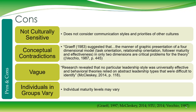McCleskey also highlights that there are quite a few ambiguities. Because it is a straightforward theory, a lot of things are vague and require judgment from the practitioner. For example, how do you judge when someone is in between two quadrants, and how is this treated? McCleskey stated: 'Research revealed that no particular leadership style was universally effective, and behavioral theories relied on abstract leadership types that were difficult to identify.' Although the theory's simplicity makes it easy to learn, the same simplicity makes it difficult to apply. In class situations, it may also be hard to apply the theory to groups, as individual maturity levels may vary a lot, making it difficult for the teacher to properly apply the theory — you would need to teach to the lowest, highest, or average maturity level, or separate students into groups.